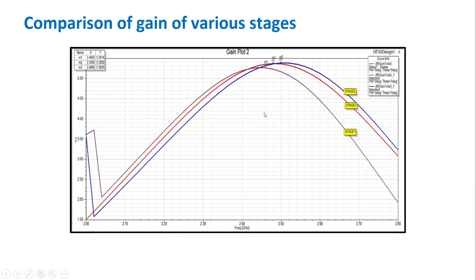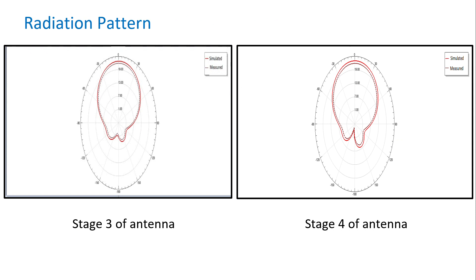When it comes to the gain of the antennas, you can observe that blue line has more gain. It is very close to 5.6 dB and it is the highest gain we have achieved in the stage 4. These are the radiation patterns of stage 3 and stage 4 of the antenna.